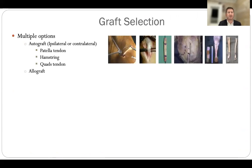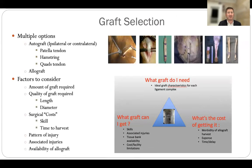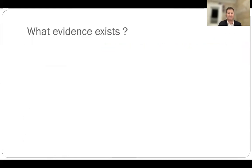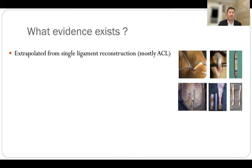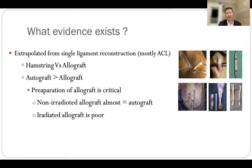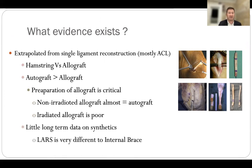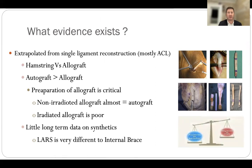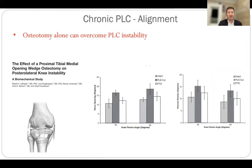Graft selection involves multiple options — autograft or allograft. Factors to consider are what graft you need, what graft you can get, and the cost of getting it. The evidence extrapolated from single-ligament data — mainly ACL hamstrings versus allograft — shows autograft does better than allograft. Preparation of allograft is critical; use non-irradiated graft if going with allograft. I'm also using internal braces to augment parts of the posterolateral corner reconstruction.